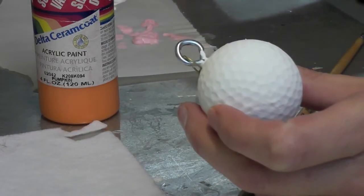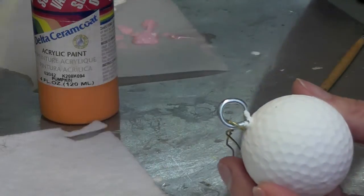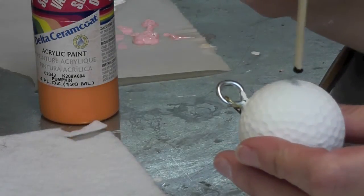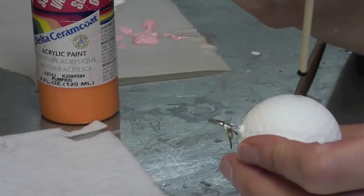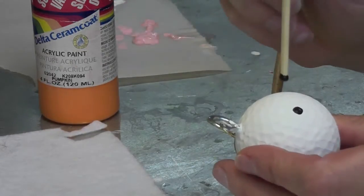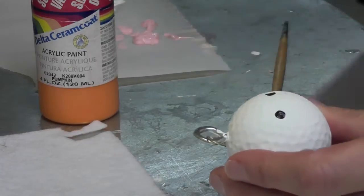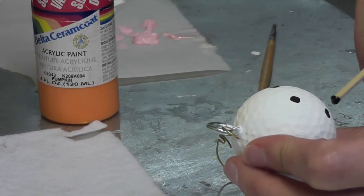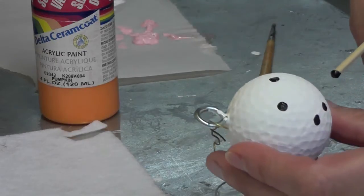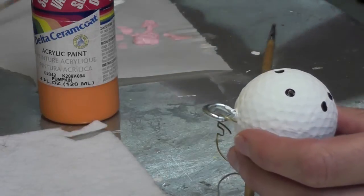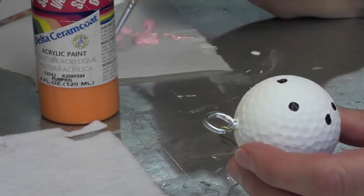But I think I'll do the eyes first and I'm just going to use the flat end of the skewer, dip it in some black acrylic paint, and I'll do two eyes. Then I will do the mouth and all I'm doing are very simple dots.